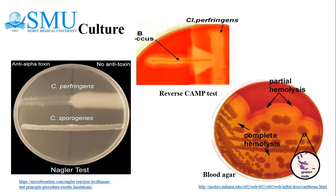Culture characteristics of Clostridium perfringens: key tests include the Nagler test and reverse CAMP test. In Nagler's reaction, Clostridium perfringens produces an opalescence surrounding the streak line on egg yolk agar or media containing 20% human serum, due to the lecithinase activity of alpha toxin. This opalescence can be inhibited by incorporating anti-alpha toxin into the medium.